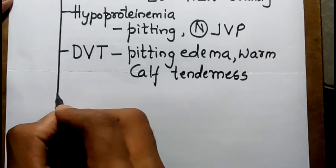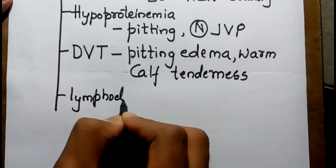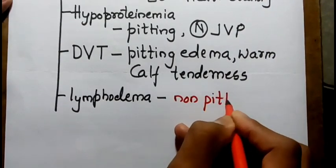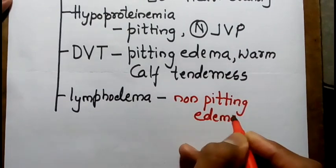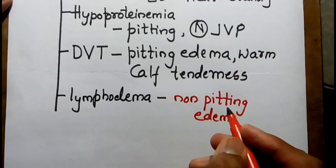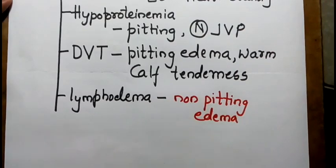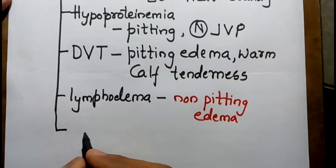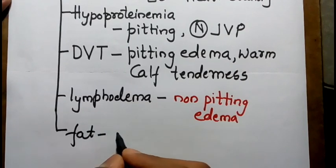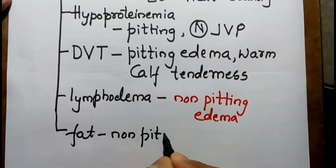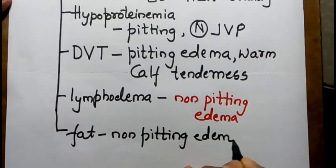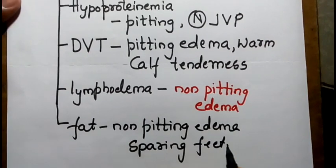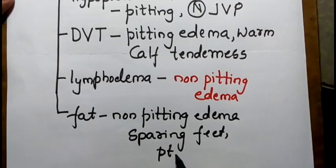In lymphedema, as in filariasis where there is obstruction of lymphatic vessels, we find non-pitting edema. If the patient is obese due to fat accumulation, it is also a non-pitting edema, sparing the feet, and the patient is obese.